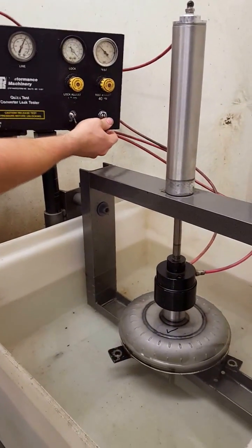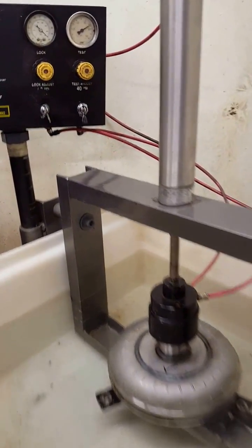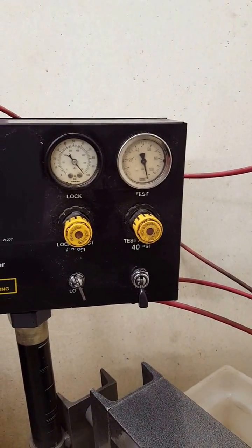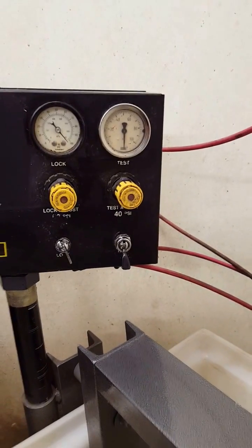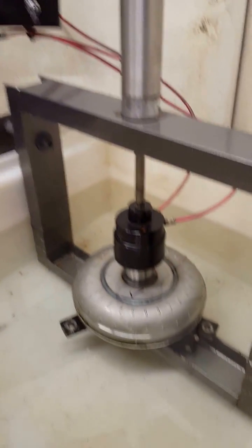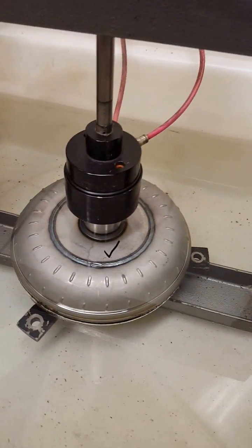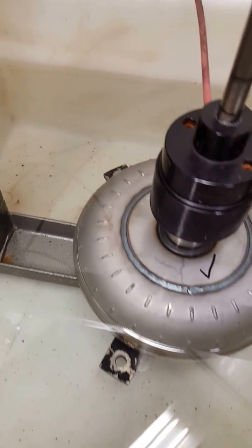Now I'll hit a button and it's adjustable for how much pressure you want to put in there. We're going on a race converter right up over 100 pounds. You can adjust it at 40 or wherever you are for street units, but since we're drag racing we're putting over 100 in there and you simply look for bubbles.